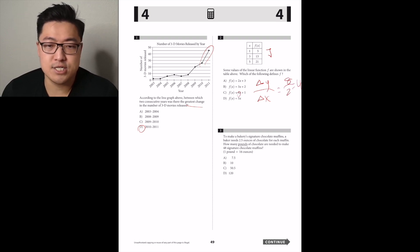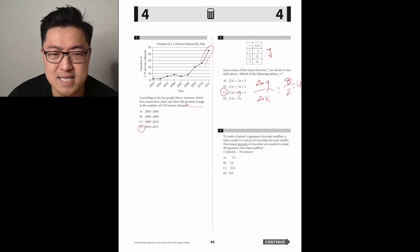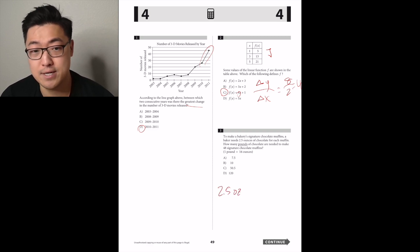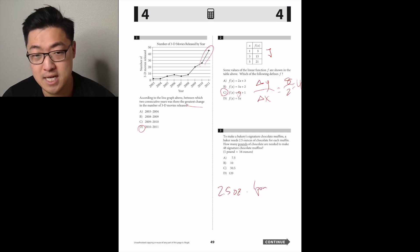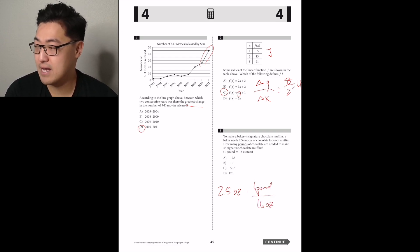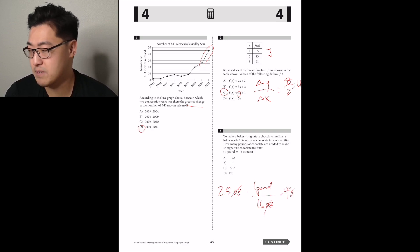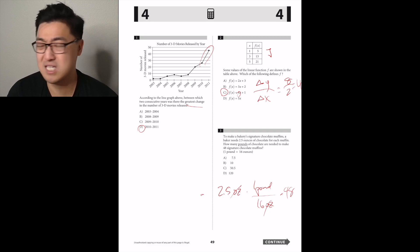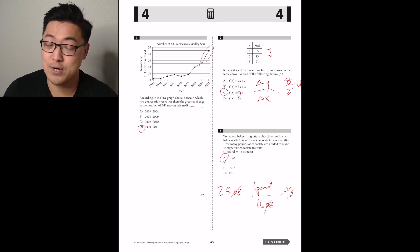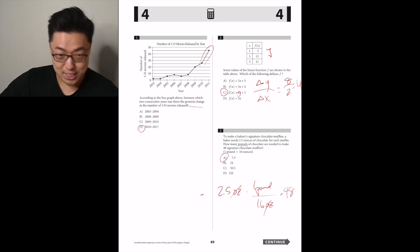To make a bakery's signature chocolate muffins, a bakery needs 2.5 ounces of chocolate for each muffin. How many pounds of chocolate are needed to make 48 muffins? That's 2.5 times 48 ounces converted into pounds. Just make a conversion ratio: 16 ounces per pound, so 2.5 times one pound over 16 ounces, then times 48. Future me, use a calculator.